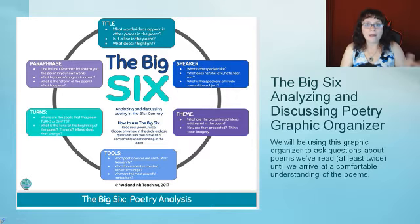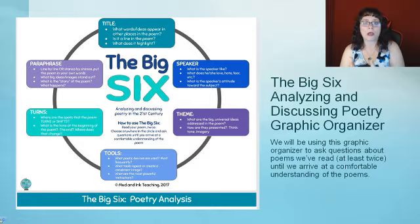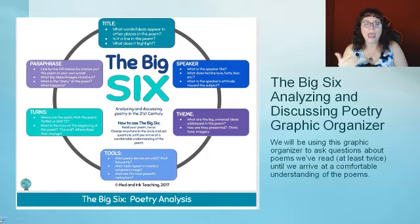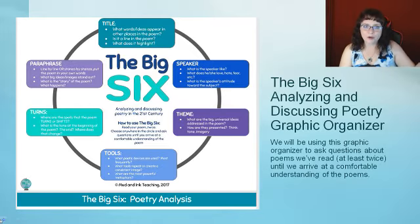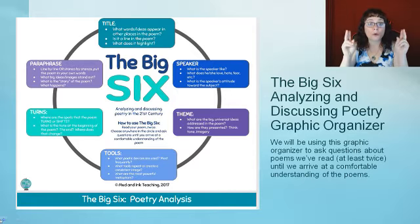What does the title highlight? The speaker section: what is the speaker like? What does he or she love, hate, fear, et cetera? What is the speaker's attitude toward the subject? Theme: what are the big universal ideas addressed in the poem, and how are they presented — think tone and imagery. Paraphrase: line by line or stanza by stanza, put the poem in your own words. What big ideas or images stand out to you? What is the story of the poem?